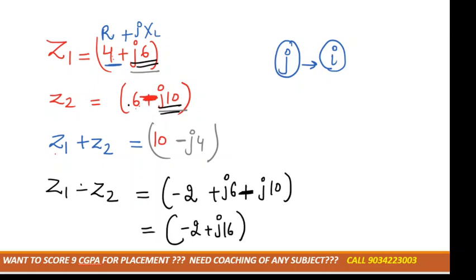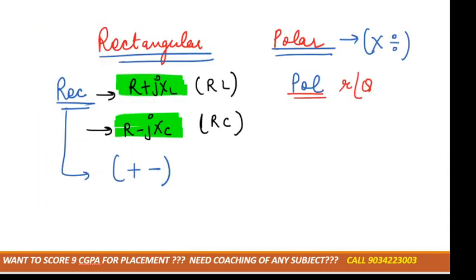Tell me any doubt up to here. This is simply Z1, this is simply Z2, and these are in the rectangular form. I told you rectangular form is in this form. We can simply add and subtract in the rectangular form.